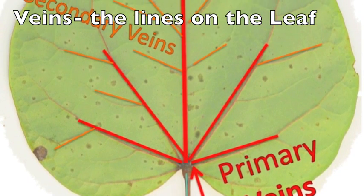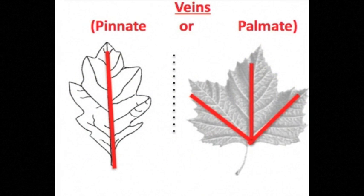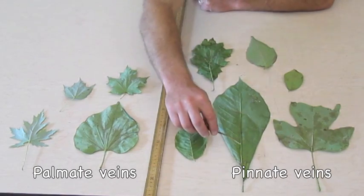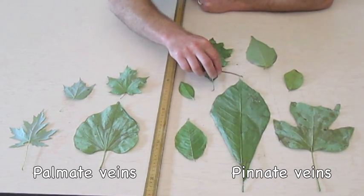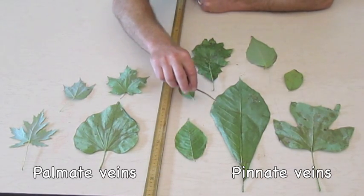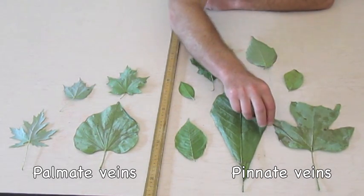Veins are the lines on the leaf. Veins can either be pinnate or palmate. Pinnate veins have one large primary vein that is thick in the middle and straight as a pin. In contrast, palmate veins have more than one primary vein coming from the petiole — usually three or five. We call them palmate because the veins extend from the petiole just like fingers extend from the bottom of your hand. These primary veins are all pinnate — there's one primary vein running down the middle of the leaf and lots of smaller, thinner secondary veins on the sides.